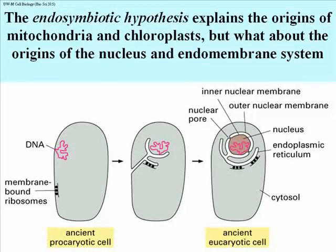Let's take a moment to consider where all of these internal cellular membranes might have come from. We have an explanation for the origin of mitochondria and chloroplasts. These were free-living prokaryotes at one time — either bacteria, in the case of mitochondria, or photosynthetic bacteria (blue-green algae), in the case of chloroplasts — that somehow got engulfed by a primitive eukaryotic cell, and instead of being digested, were kept and became endosymbionts. Hence the endosymbiotic hypothesis might explain the origin of these particular organelles.